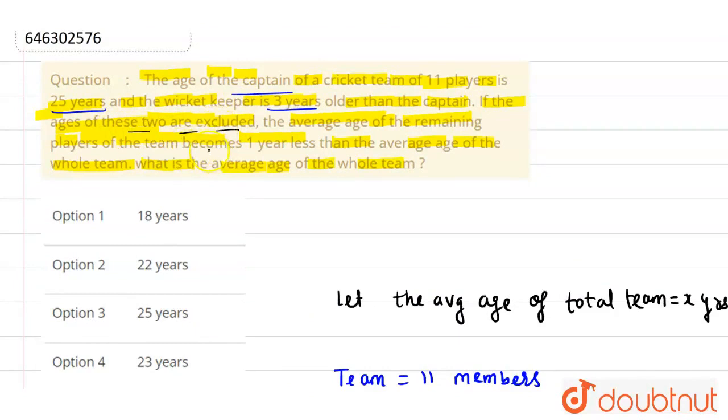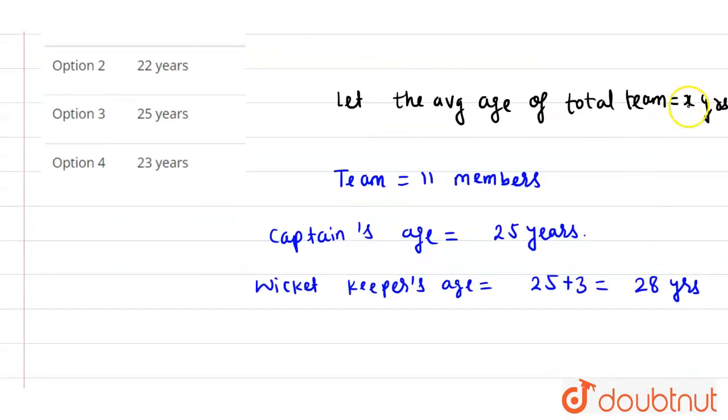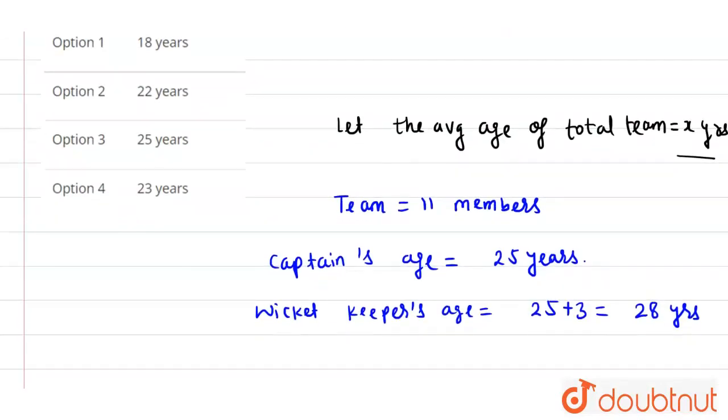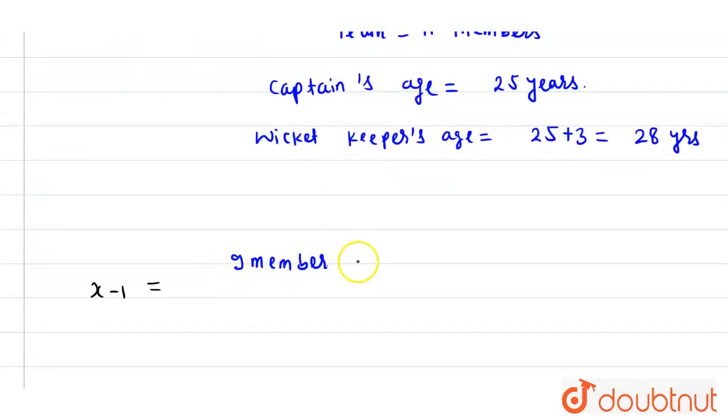The average age of the remaining team will be 1 year less than the average age. So the average is x minus 1. The 9 members' total age divided by 9 equals x minus 1.